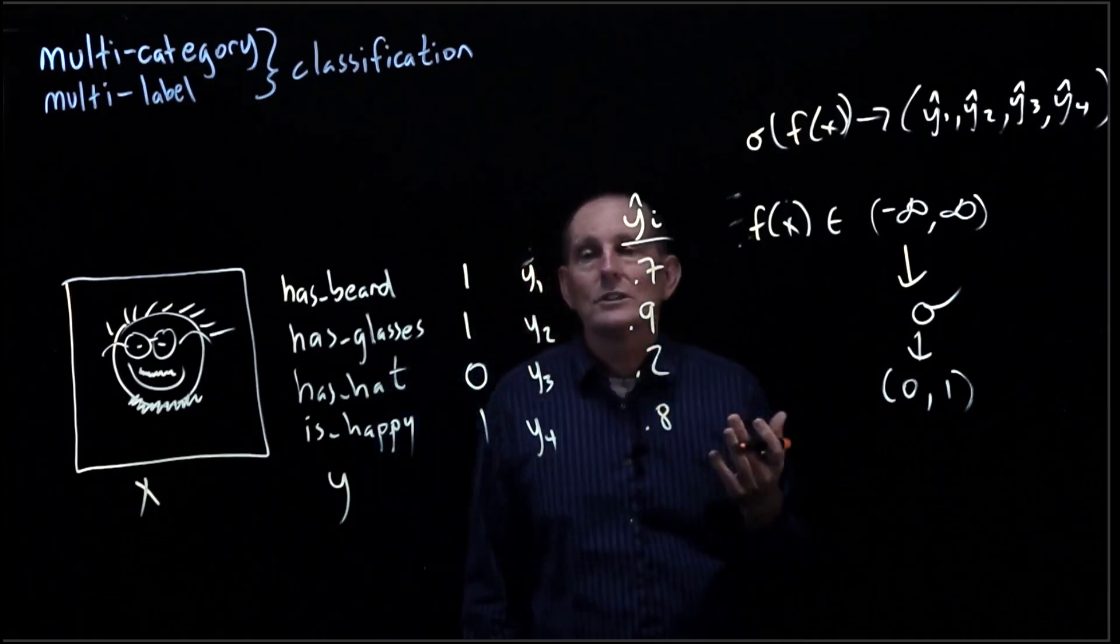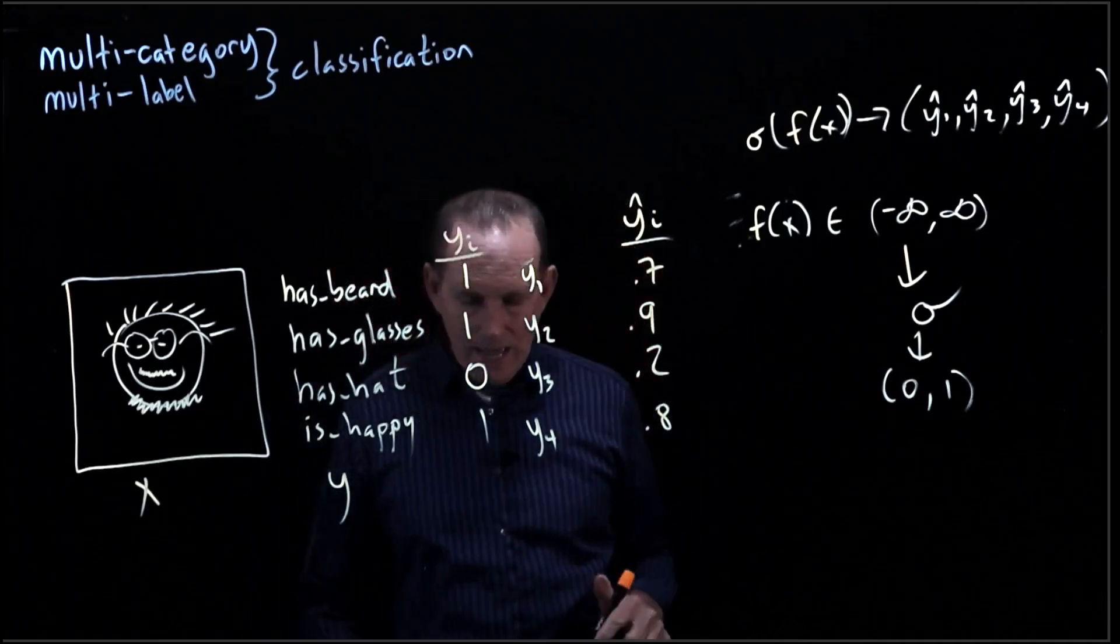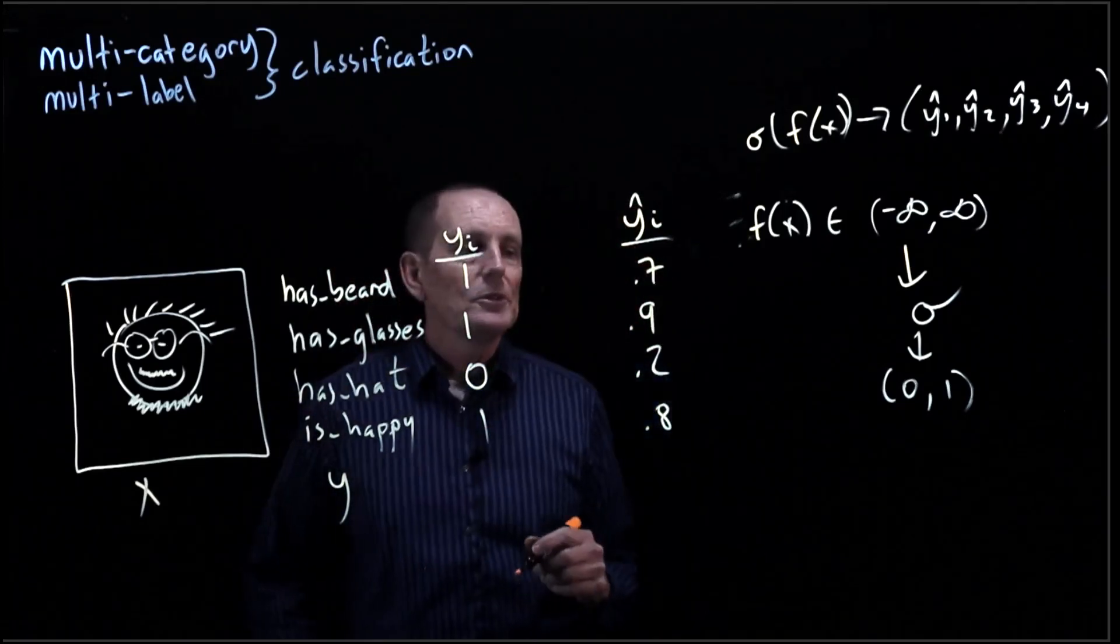And now we've got to decide, okay, well what's our loss here? So these are our y sub i's and these are our y hat sub i's. So how are we going to compute the loss?